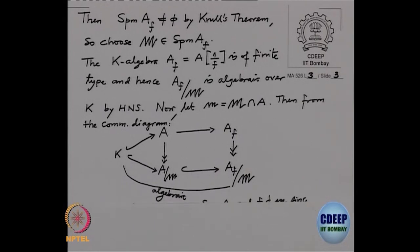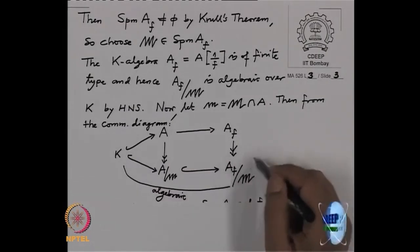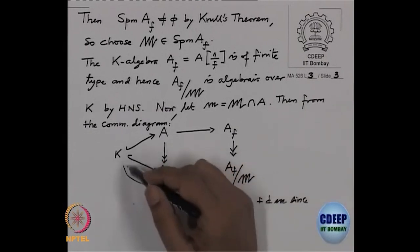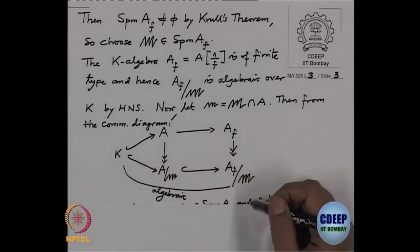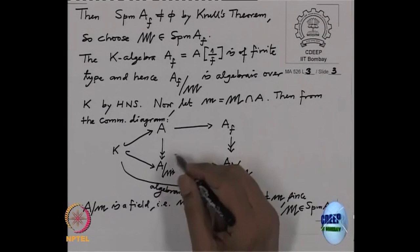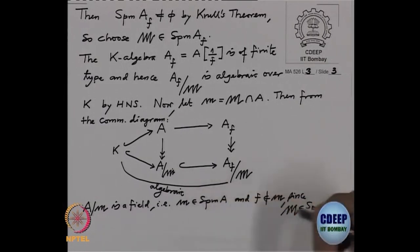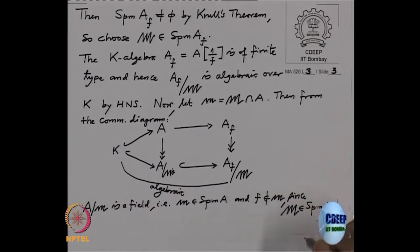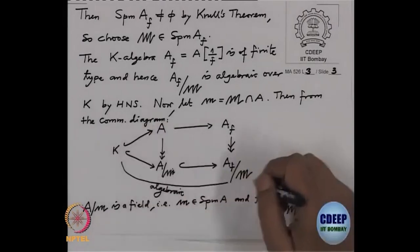In this commutative diagram, the extension K to A_F mod capital M is algebraic by HNS, since it is finite type over K. Now A mod small gothic m is a ring in between. If I can prove that A mod small gothic m is a field, then small gothic m is a maximal ideal in A, and that maximal ideal cannot contain F — because if it contained F, then capital M would also contain F, which is impossible. So I must justify that a subring lying between an algebraic extension of fields is also a field.